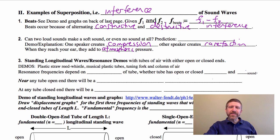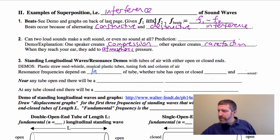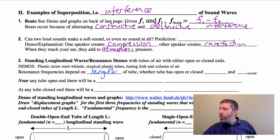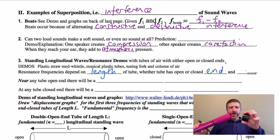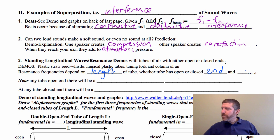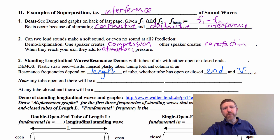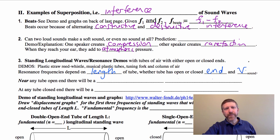Now resonance frequencies depend on several things for these standing sound waves. They depend on the length of the tube. They also depend on whether the tube has an open or closed end. For example, you can see this tube has two open ends, or I could put a closed end on it like that. It also depends on the speed of sound — these demos would sound different if I was in an atmosphere of hydrogen or helium or any other gas besides nitrogen and oxygen.